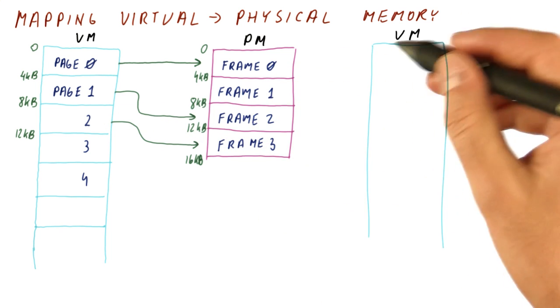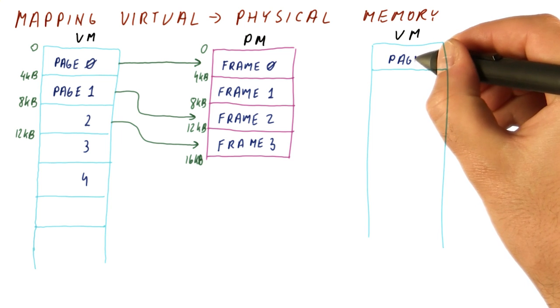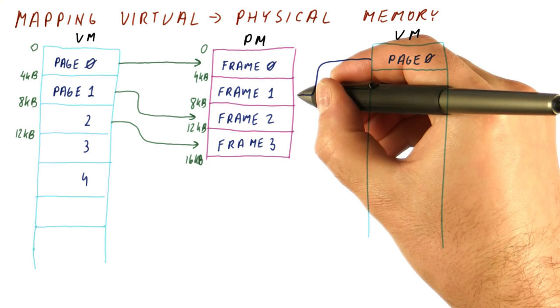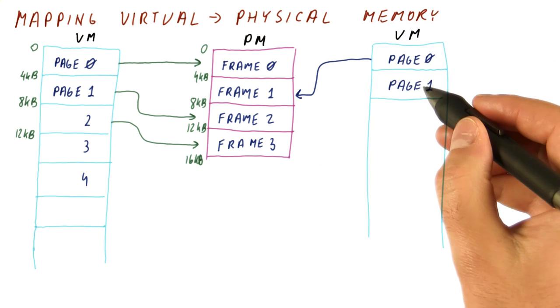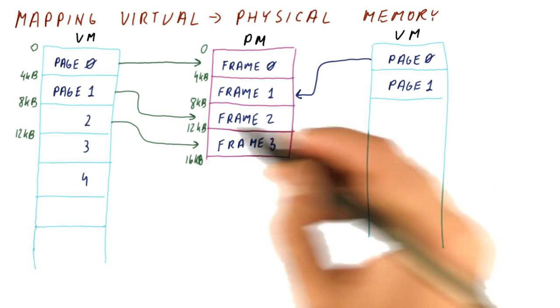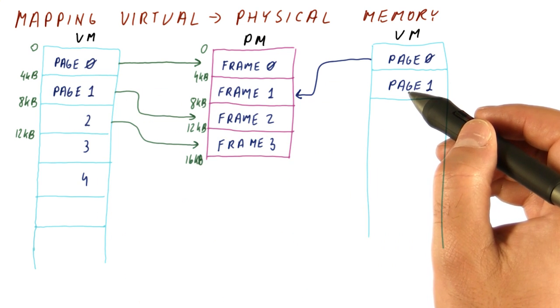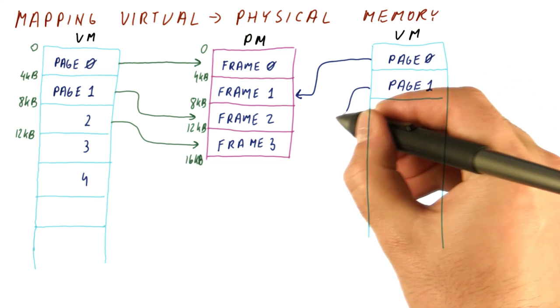If we have another process, it has its own page zero, page one, et cetera. And these pages might map to different frames. If we want this page one and this page one to be the same, because these two processes need to share memory, then we can map them to the same frame.